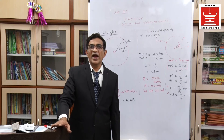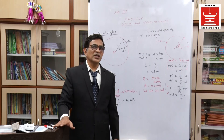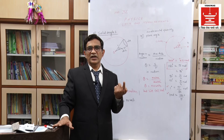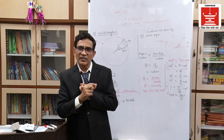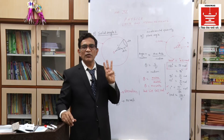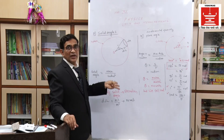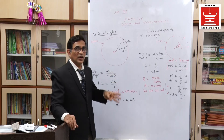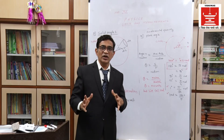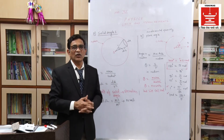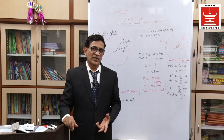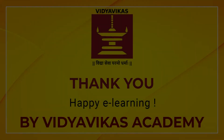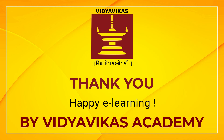With this, we end the first part of the chapter. We have learned: what a unit means, the different types of measurement systems, the seven fundamental quantities and two supplementary fundamental quantities, and what derived quantities mean — all quantities which depend on fundamental quantities. Our next article will be focused on derived quantities. We will stop here now. Thank you.